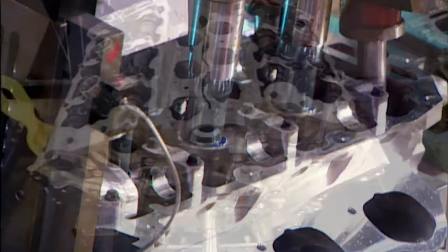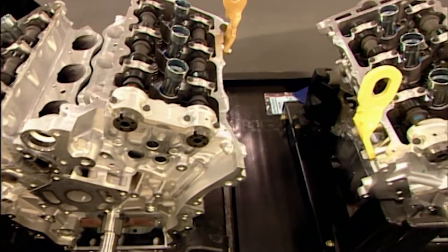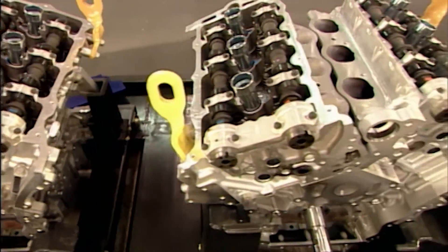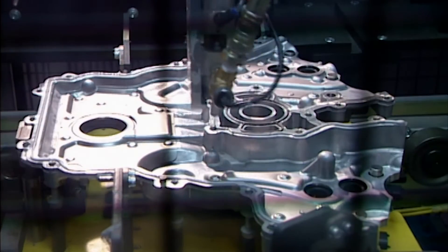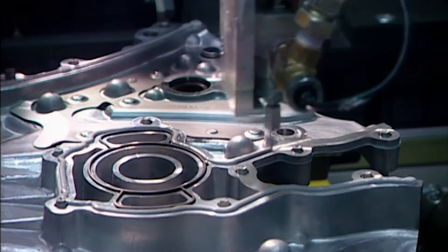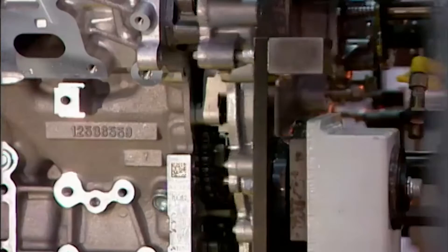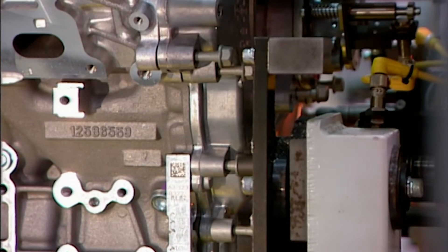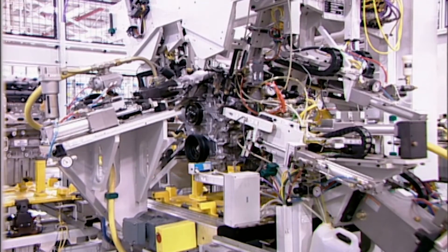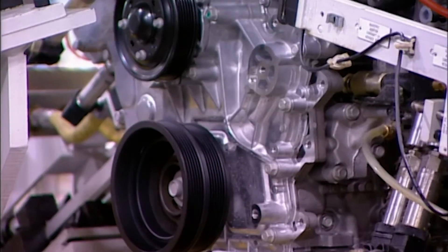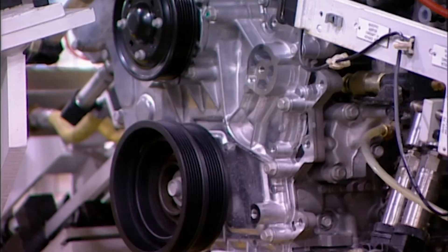The black tubes running front to back are the camshafts, the components that open and close those valves. There are four per engine. A robot applies sealant and then bolts a cover onto the front of the engine block over a component called the timing chain. This chain connects the crankshaft to the camshafts, so they rotate in unison. This ensures the valves open when the pistons are in the right position.